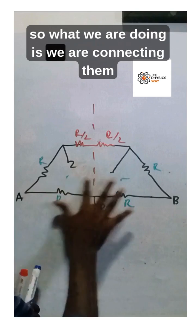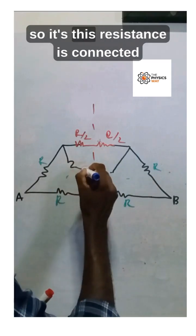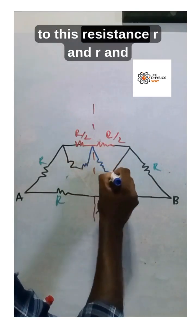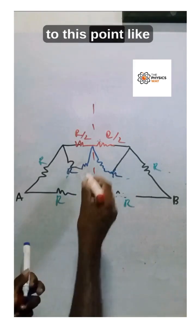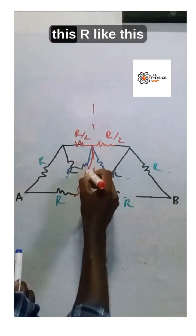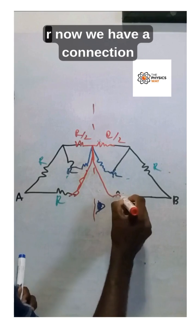This resistance is connected to this resistance R and R. These resistors are also connected to this point, like this R and like this R. Now we have a connection with R by 2 and R.